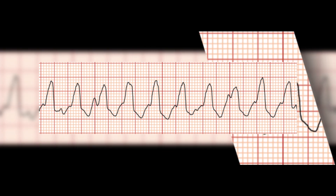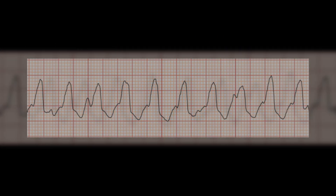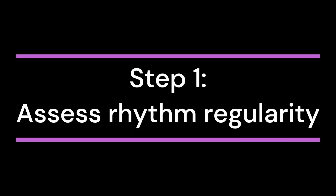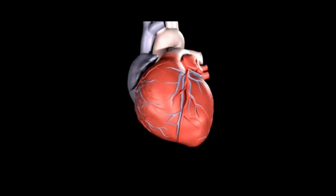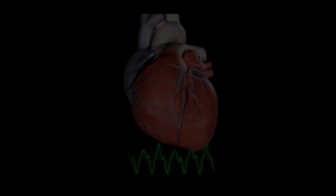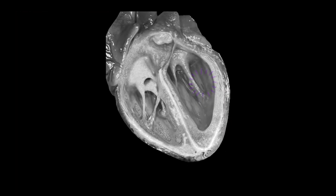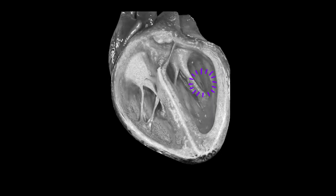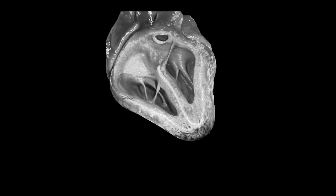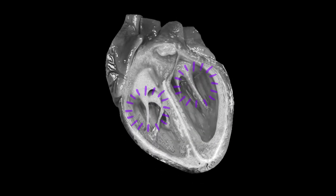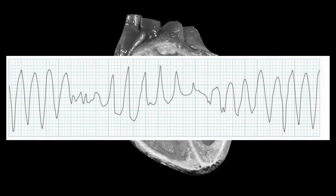Let us analyze ventricular tachycardia using the five steps of EKG rhythm analysis. Step 1: Assess the regularity of the rhythm. Ventricular tachycardia can be regular or irregular. In some cases, the electrical impulses originate from a single location in the ventricles, leading to a regular rhythm. In other cases, the impulses may originate from multiple locations, causing the rhythm to be irregular.